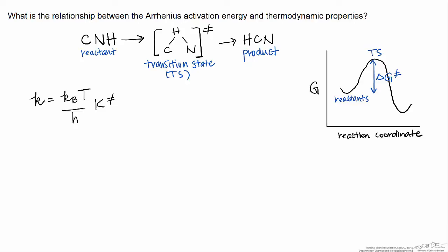We want to understand how this rate constant — defined based on first principles and assumptions about the nature of the potential energy surface — relates to a purely empirically derived relationship for the rate constant, which is the Arrhenius expression. The Arrhenius expression tells us that the rate constant is equal to some temperature-independent prefactor times an exponential of the negative activation energy, which is also temperature-independent, over RT.